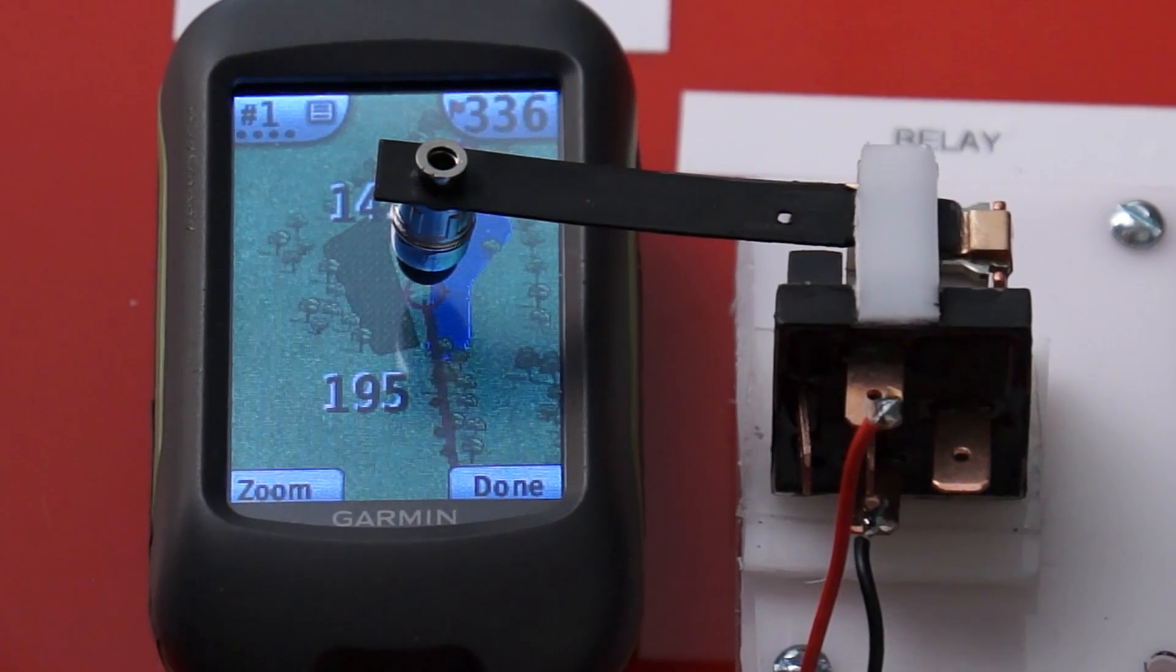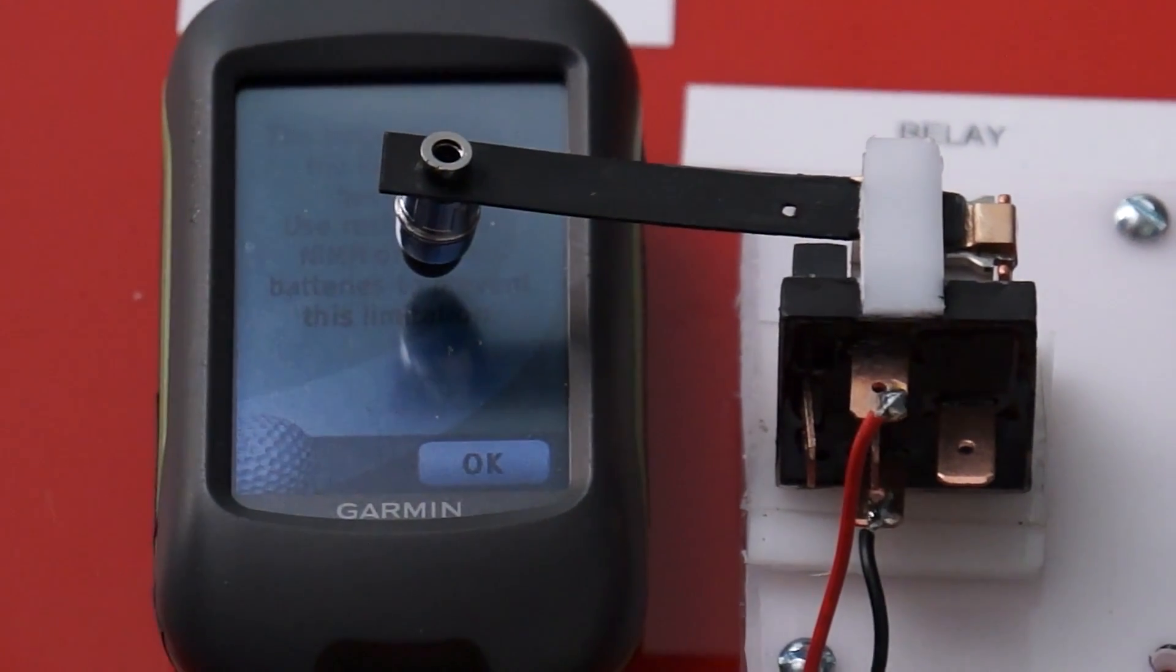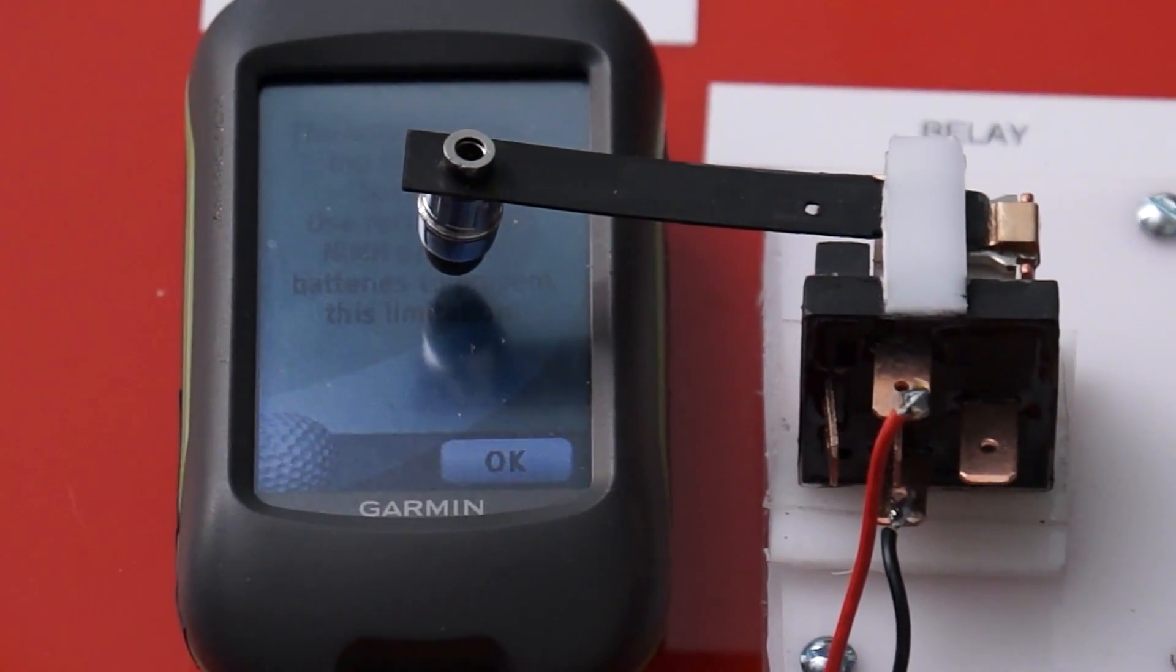The data shows that the GPS will stop functioning after 1 hour and 52 minutes and the screen dims to dark.